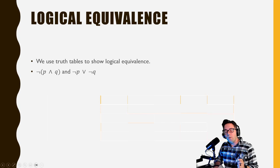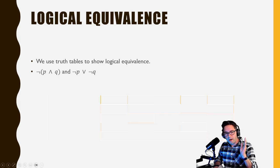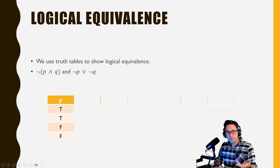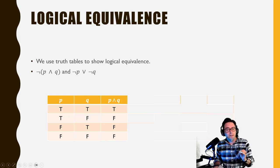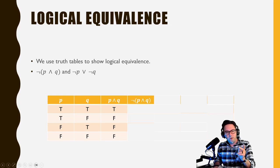What we can use truth tables for is showing equivalence. I'm going to show how not(P and Q) and not P or not Q are the same thing. I'll make a table with P, Q, and P and Q — which gives true, false, false, false. The negation of that is false, true, true, true. Then I need not P: false, false, true, true. And not Q: false, true, false, true.